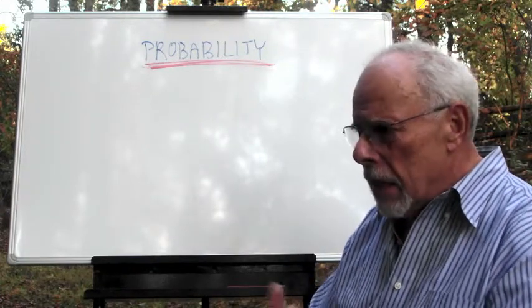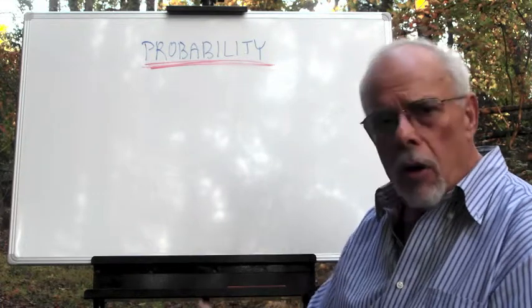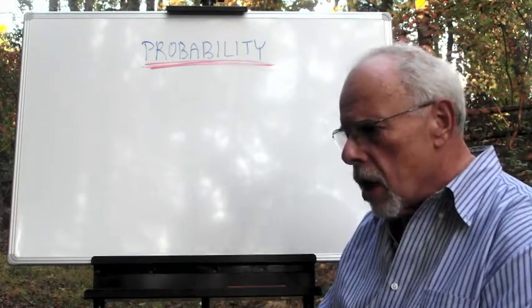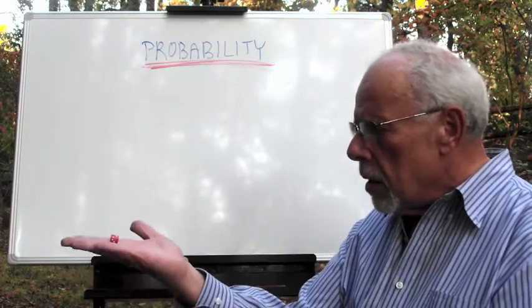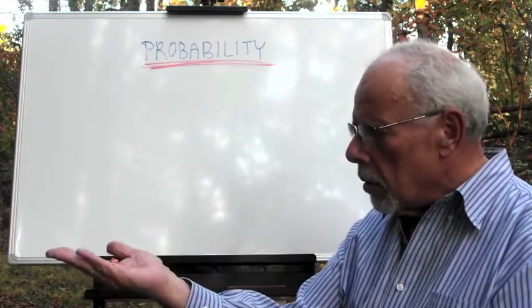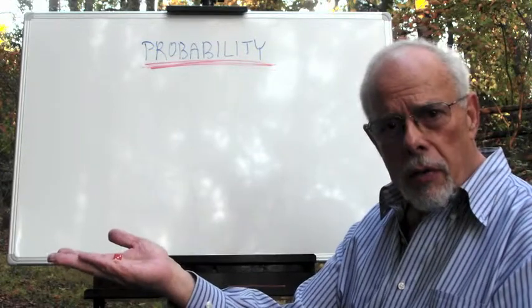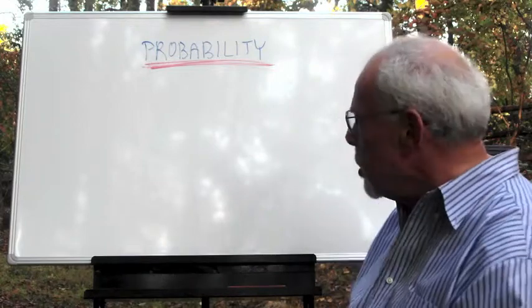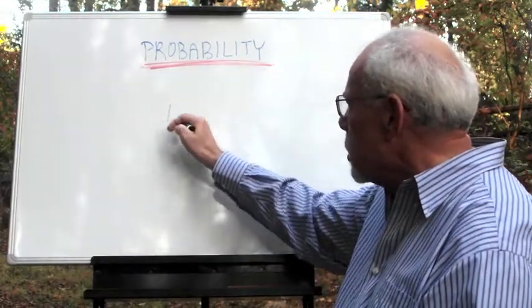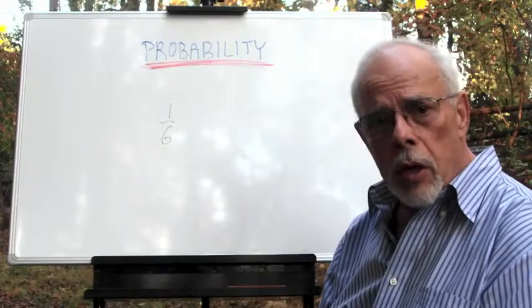We all have this sense that if we flip a coin, there is a 50% chance head, 50% chance tail. We take a dice, every number on the six faces of the dice has a chance of one-sixth, because there are six numbers, one-sixth to be on top.